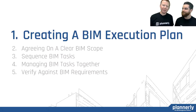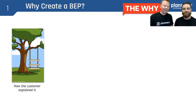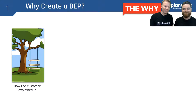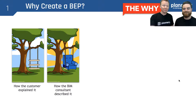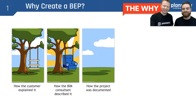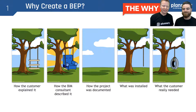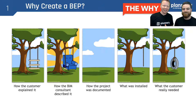The first one: creating a BIM execution plan. Why do we need a BIM execution plan? We're going to borrow the project cartoon here and understand that sometimes people have different views. How the customer explained it, how the BIM consultant described it, how the project was actually documented, what was installed, and then what the customer really wanted was just a tire swing. This helps us understand the importance of having a BIM execution plan.